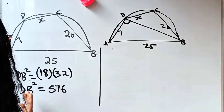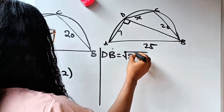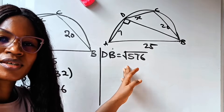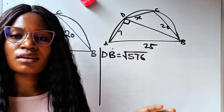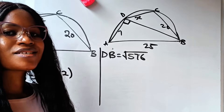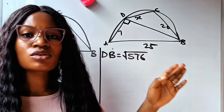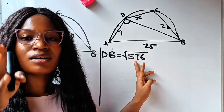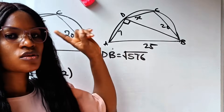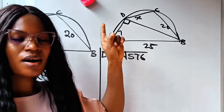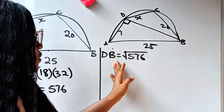To get DB, we need the square root of 576. Without a calculator, I'll use a math trick. This trick is part of a playlist called 'Math Tricks' on this channel — check it out for various tricks to solve daily math problems without a calculator.